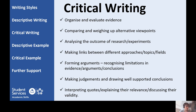These are some examples of how you could bring critical writing into your work. If you're organising and evaluating the evidence that you've got, you would use critical writing to do that. You would compare and weigh up alternative viewpoints and put those into your writing. You might be analysing the outcome of research and experiments and thinking about why they were particularly relevant or important. You might want to make links or connections between different approaches or topics, or try to form some arguments.